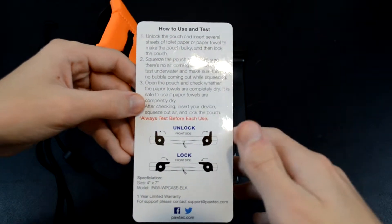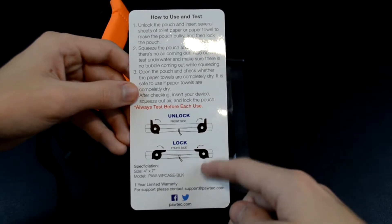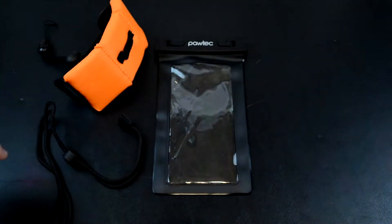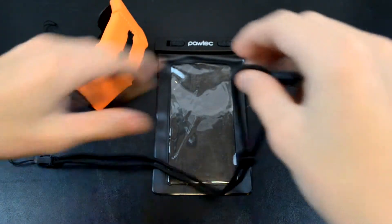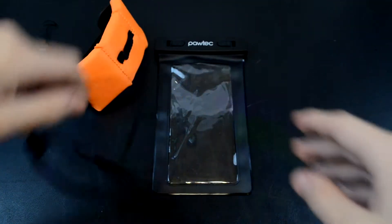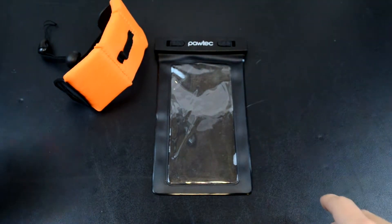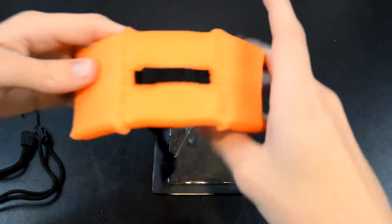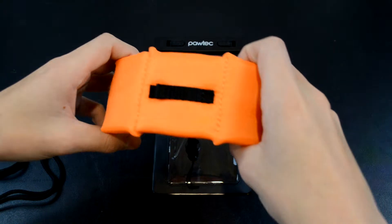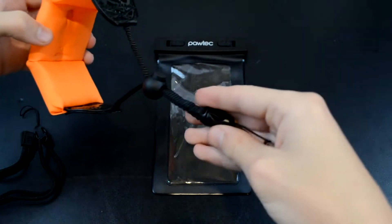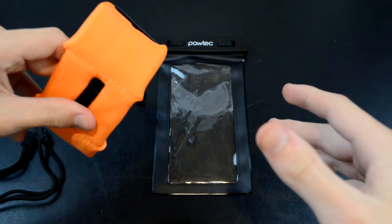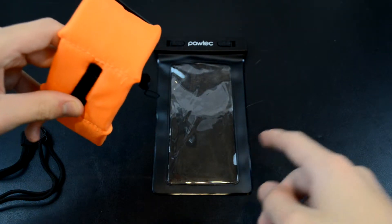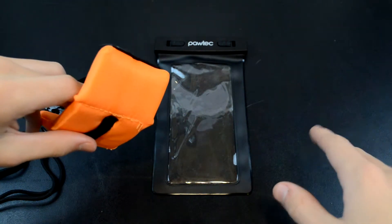Also included is an 18-inch lanyard so you can put this around your wrist or around your neck to keep the pouch attached. You also have this little orange floater that you attach to the pouch. If you drop your device in the water with it inside the pouch, it's not going to sink to the bottom. It's just going to float at the surface.